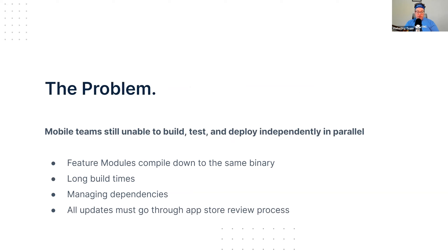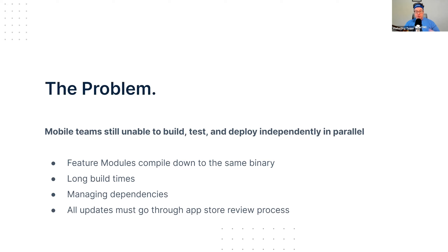There's still a problem with the feature module approach: our mobile teams are still unable to build, test, and deploy their apps in parallel. Because you're still compiling down to the same binary, yes the feature module approach is a step forward where you're splitting teams into individual business units, but they still have to be combined at the end of the day into that same binary — at least at an integration step at the end of your testing and release cycle.